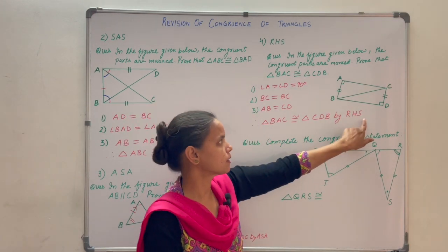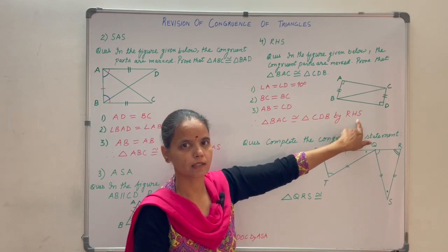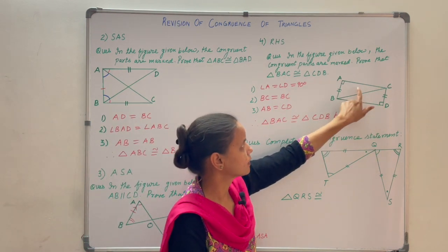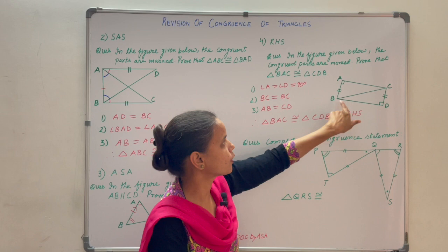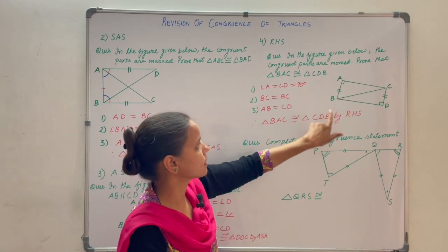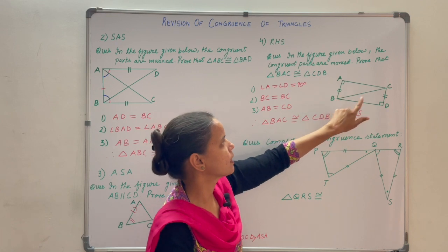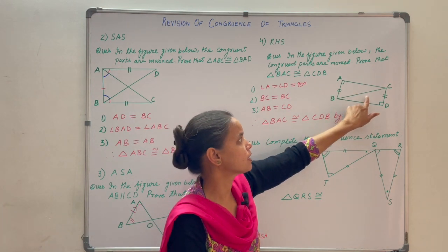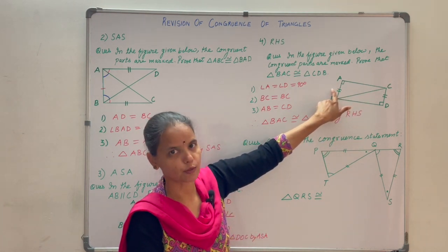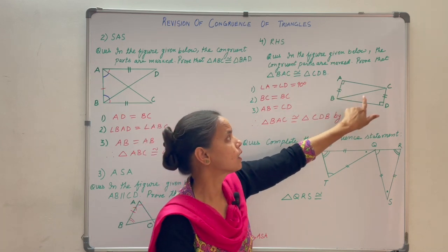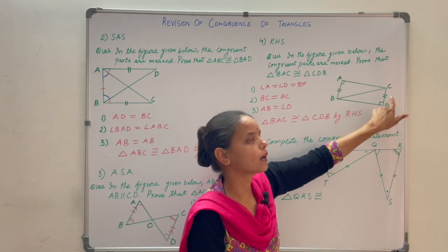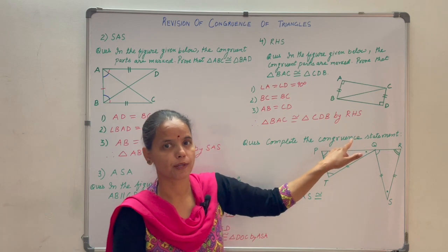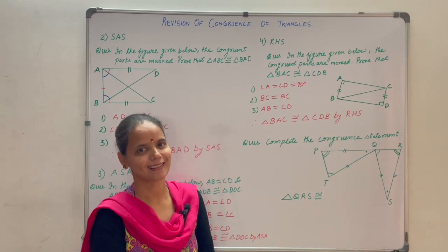RHS means Right angle, Hypotenuse, and Side. Here angle A equals angle D — that is the right angle. BC is the hypotenuse, and AB and CD are the sides. If under correspondence the hypotenuse and one side of a right-angled triangle are respectively equal to the hypotenuse and one side of another right-angled triangle, then those two triangles are said to be congruent by RHS congruency criterion.